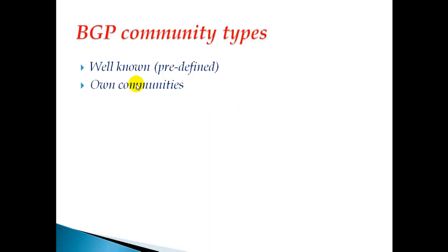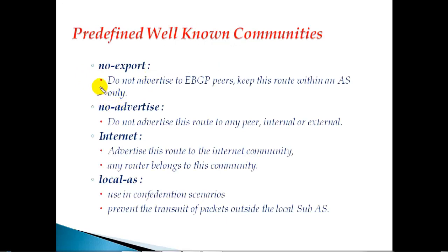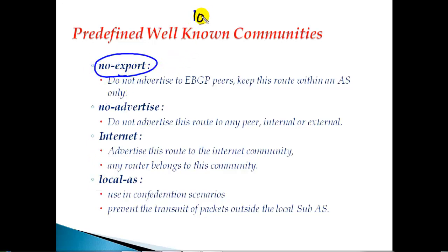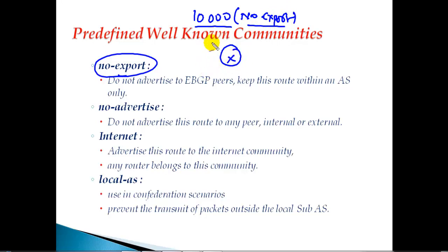There are four major categories of predefined well-known communities: no export, no advertise, internet, and local-as. When you say no export, let's take an example - I'm going to match a 10.x network and add the community value of no export. Whenever a router receives any network with community value of no export, it will not advertise that particular route to any of its eBGP neighbors.